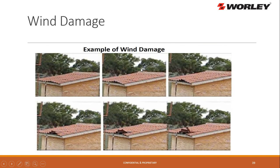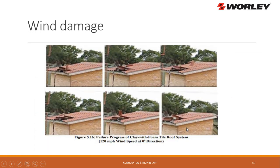This is a Donat Engineering test: they built a flat roof, applied clay tile with foam, and subjected it to 120 mph wind. You can begin to see tiles lifting at the eave, then shuffling, then becoming displaced, then flying off. These tiles are popping up, pulling back, and taking more tile with them as the wind catches it. They're flying off, probably impacting other pieces. The ridge is not caught but all these tiles are coming off — failure progression of a clay-with-foam tile roof system at 120 mph.